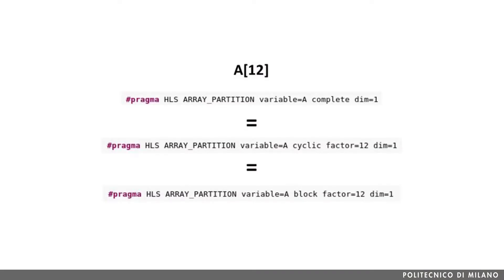Finally, when we apply complete partitioning, we assign each element of the array to its own memory. Since having a memory with single elements is quite a waste, Vivado HLS maps single elements as registers using flip-flop resources instead of BRAMs. As you can see from the image, a complete partitioning of an array A of 12 elements is equivalent to a block partitioning or a cyclic partitioning with a factor of 12.